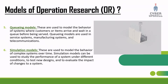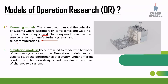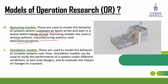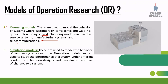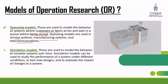The fifth type is the queuing model. Queuing models are used to model the behavior of systems where customers or items arrive and wait in a queue before being served. This is how a queueing model serves the process.